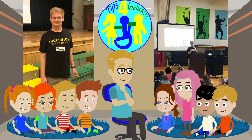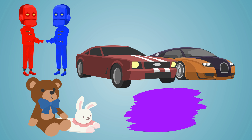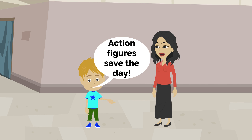Do kids with autism talk about the same things over and over again? Yes, they can. This is because talking about things over and over again makes them feel comfortable. Talking about things over and over again are called special interests. They might talk about action figures, race cars, stuffed animals, or even the color purple over and over again. People on the spectrum feel happy when they talk about their special interests with other people.